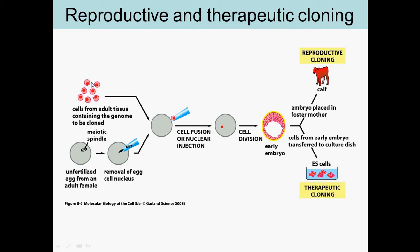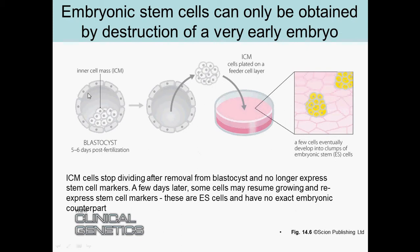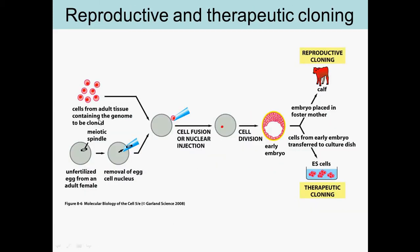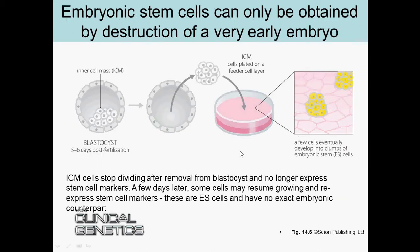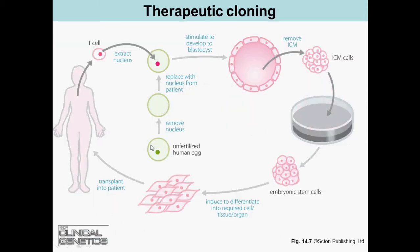If instead of placing the embryo into a cow you put it on plates, you get embryonic stem cells and can do therapeutic cloning. You remove some ICM — the inner cell mass — from the blastocyst and plate them. They reproduce a bit and don't have exact embryonic counterparts, so they're pluripotent.